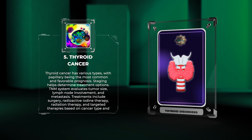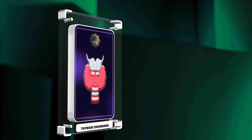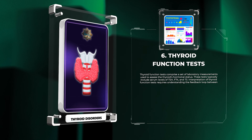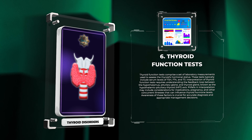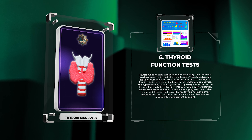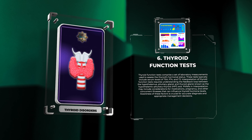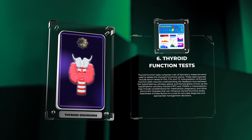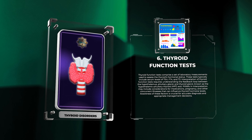Thyroid cancer has various types, with papillary being the most common and carrying a favorable prognosis. Staging helps determine treatment options; the TNM system evaluates tumor size, lymph node involvement, and metastasis. Treatments include surgery, radioactive iodine therapy, radiation therapy, and targeted therapies based on cancer type and stage.